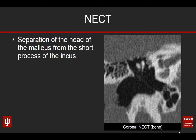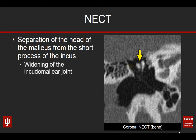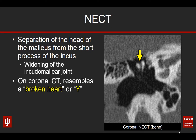Let's take a look at the imaging. This is the first patient seen in the coronal plane. What you can see is we have separation of the head of the malleus from the short process of the incus, which is out lateral in the coronal plane. That gives us widening of the incudomallear joint, right where the yellow arrow is pointing. On coronal CT, this has been said by some — i.e. Rick Wiggins — to resemble the appearance of a broken heart. In the ENT literature it's been described as a Y sign. I like the broken heart way of looking at it — the morphology of these two bones split apart looks like a heart being broken in half. So, broken heart sign of this particular finding.